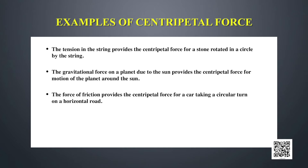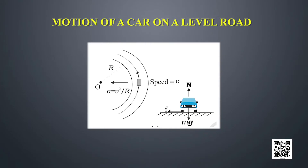Likewise, satellites are pulled towards planets for their circular motion by gravitational force. The force of friction provides centripetal force for a car taking a circular turn on a horizontal road. In the diagram, you can see a car on a level road where R denotes the radius of the circular path. The force required for circular motion is mv² / r.